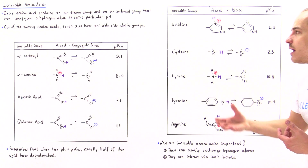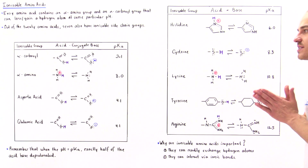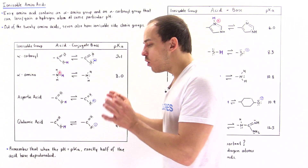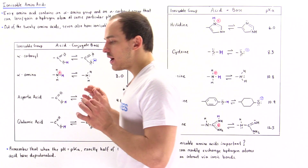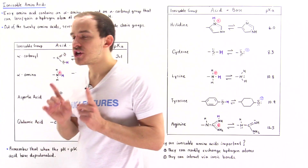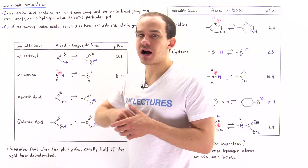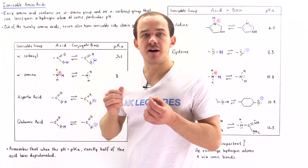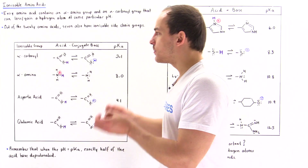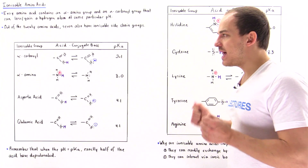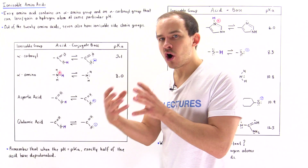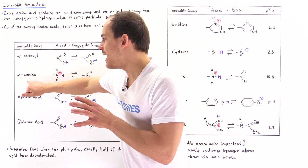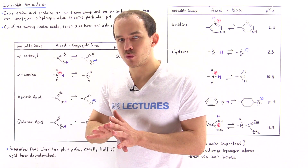On top of these ionizable sidechain groups found on these seven amino acids, every one of our amino acids also contains ionizable alpha-carboxyl groups and an ionizable alpha-amino group. Remember, every single alpha-amino acid contains a central carbon that is bound onto a carboxyl group and onto an amino group.